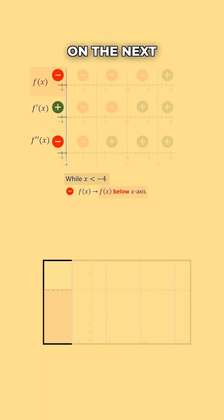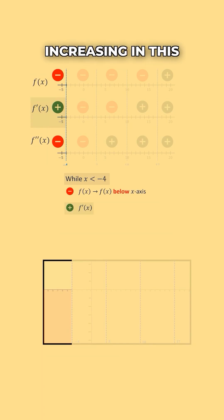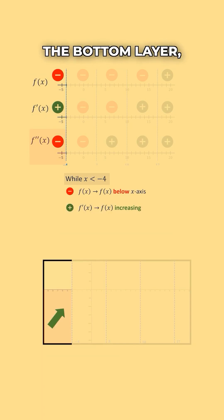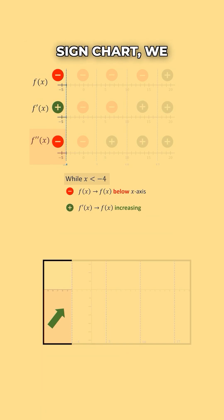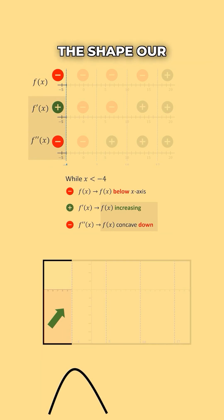Then on the next level down, our first derivative sign chart, we have a positive sign, which tells us our function is increasing in this section. Finally, on the bottom layer, our second derivative sign chart, we have a negative, which tells us our function is concave down. We can use the first and second derivative to determine the shape our function will take on in this section.